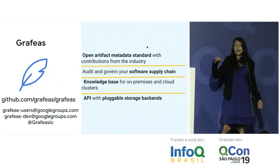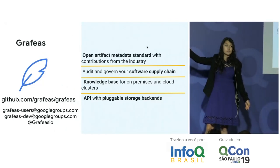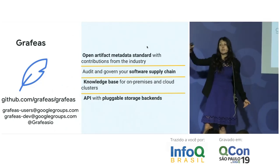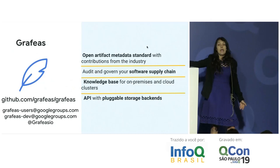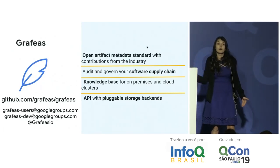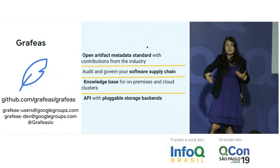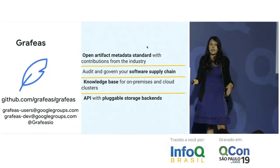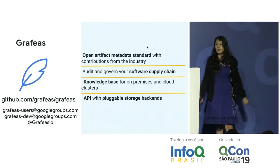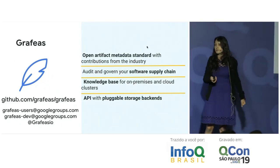To sum up Grafeas: it's an open artifact metadata standard with industry contributions. It audits and governs your software supply chain without slowing down development. It's a knowledge base for all artifact metadata, focused on hybrid cloud solutions so you can use it across on-premises and cloud clusters. It's an API with pluggable storage backend, so regardless of your preferred storage, you can implement bindings against the API.